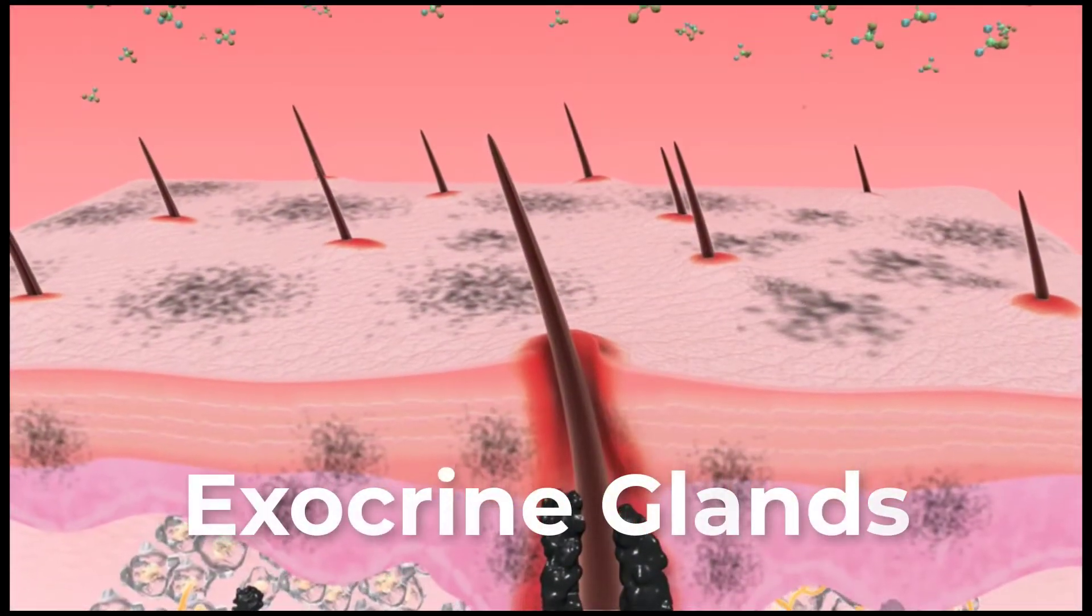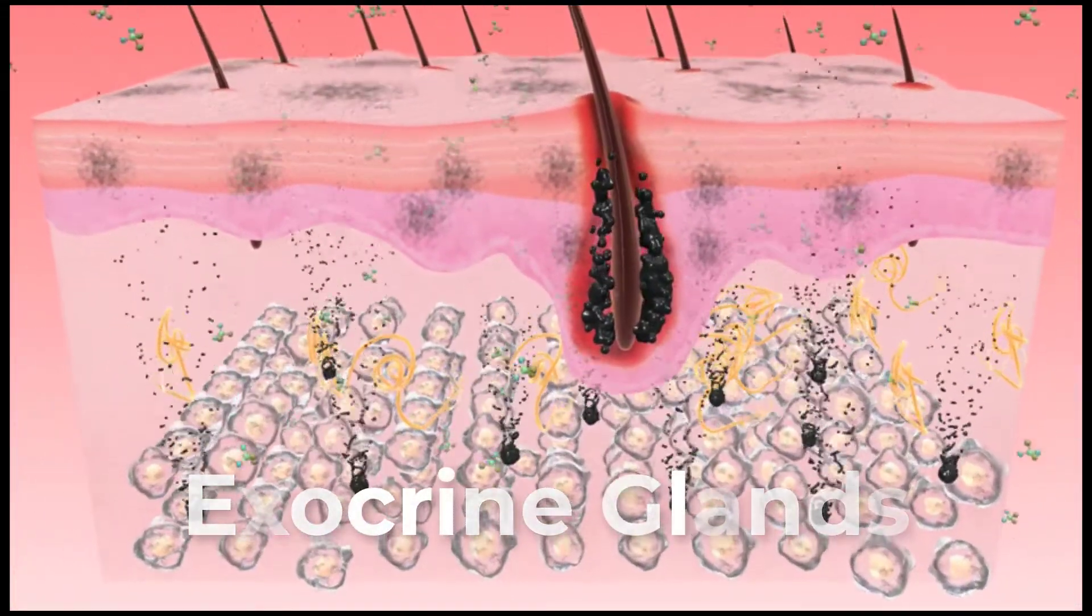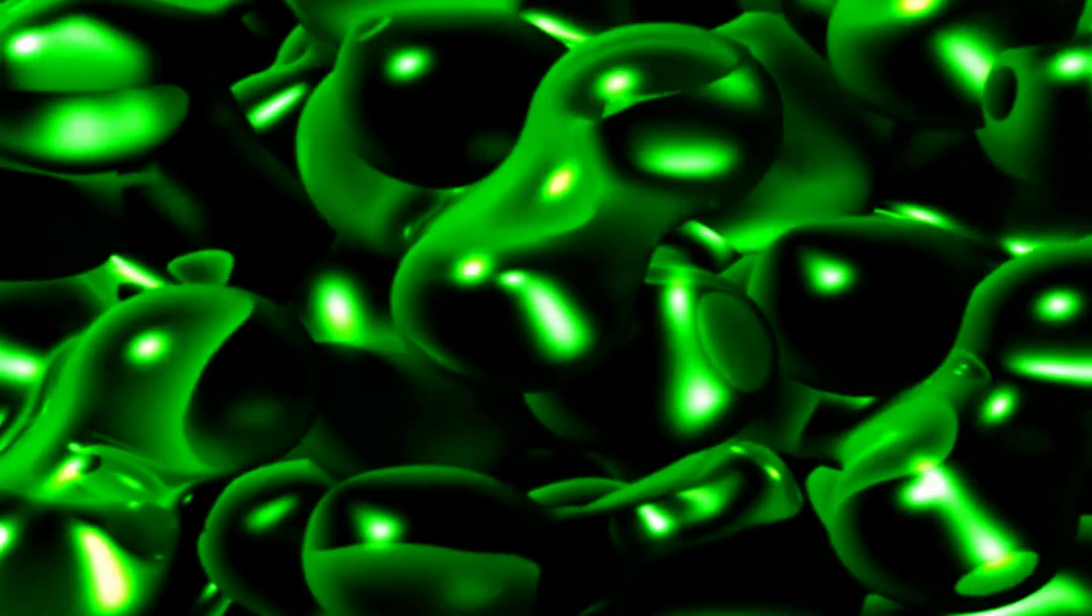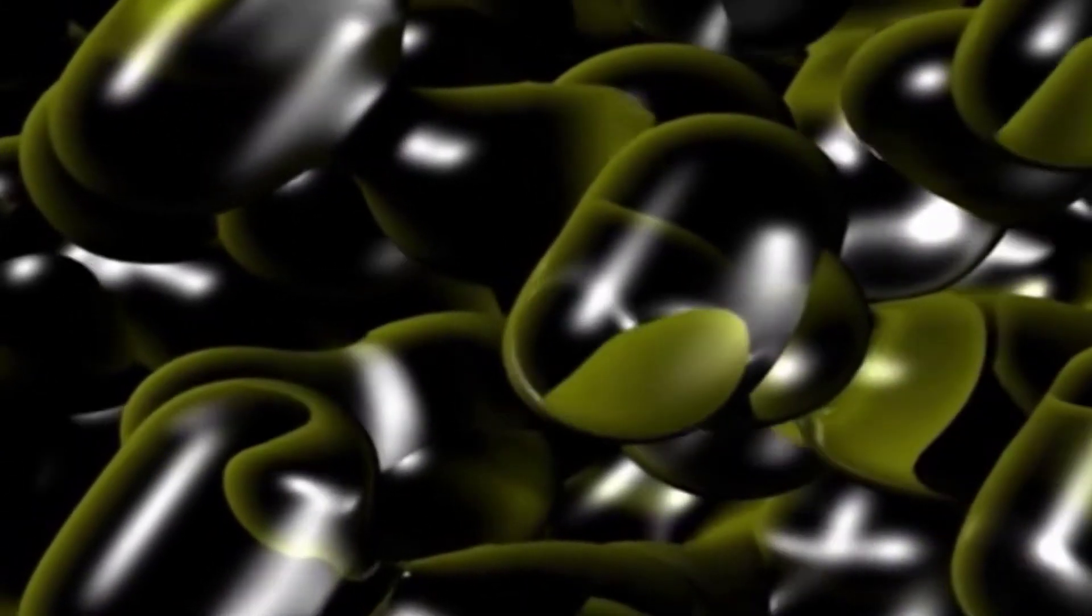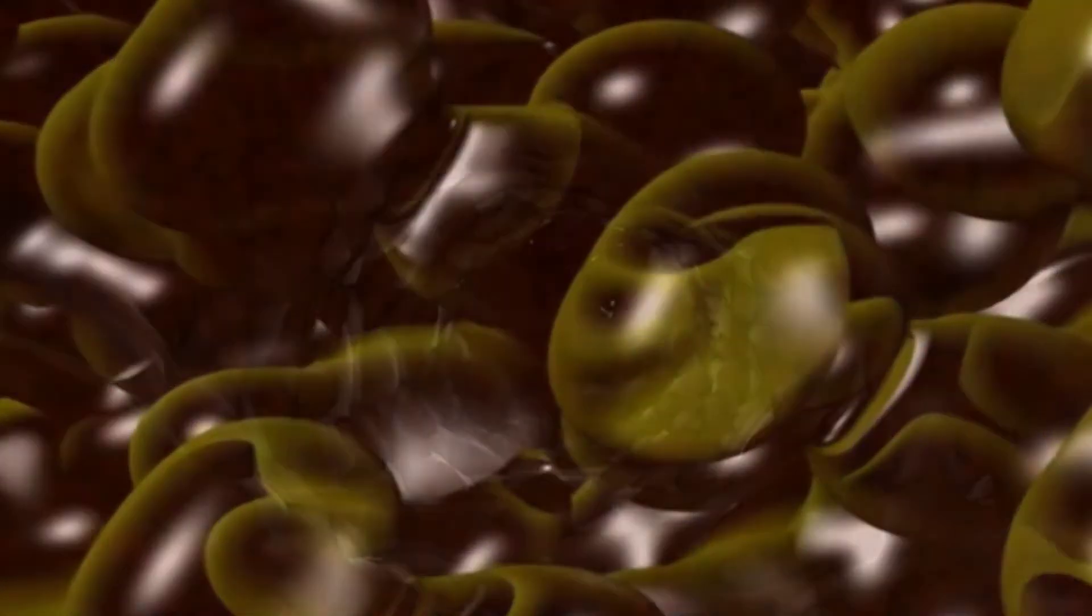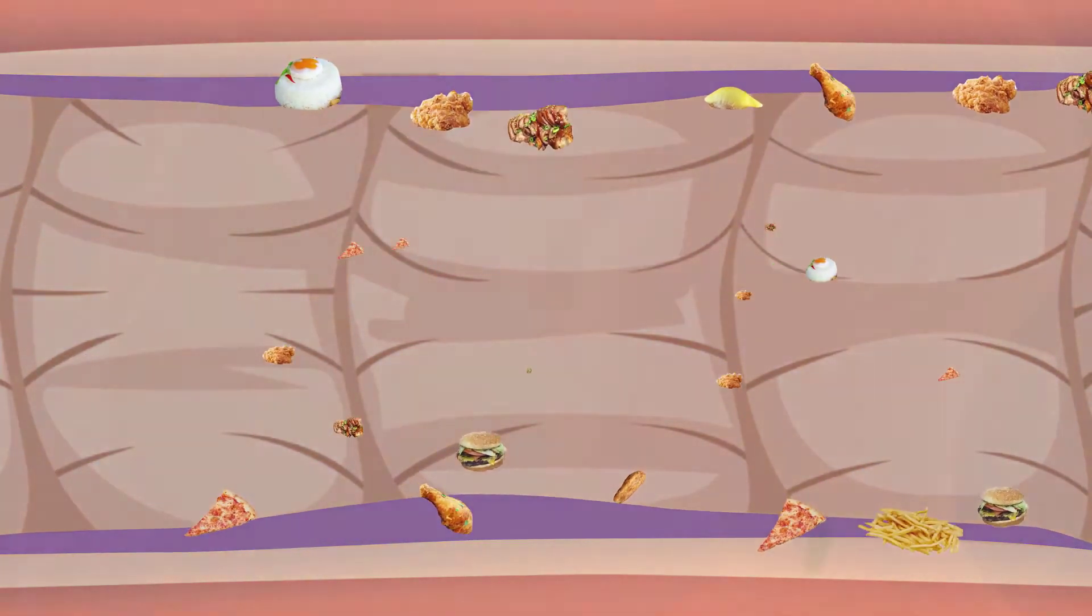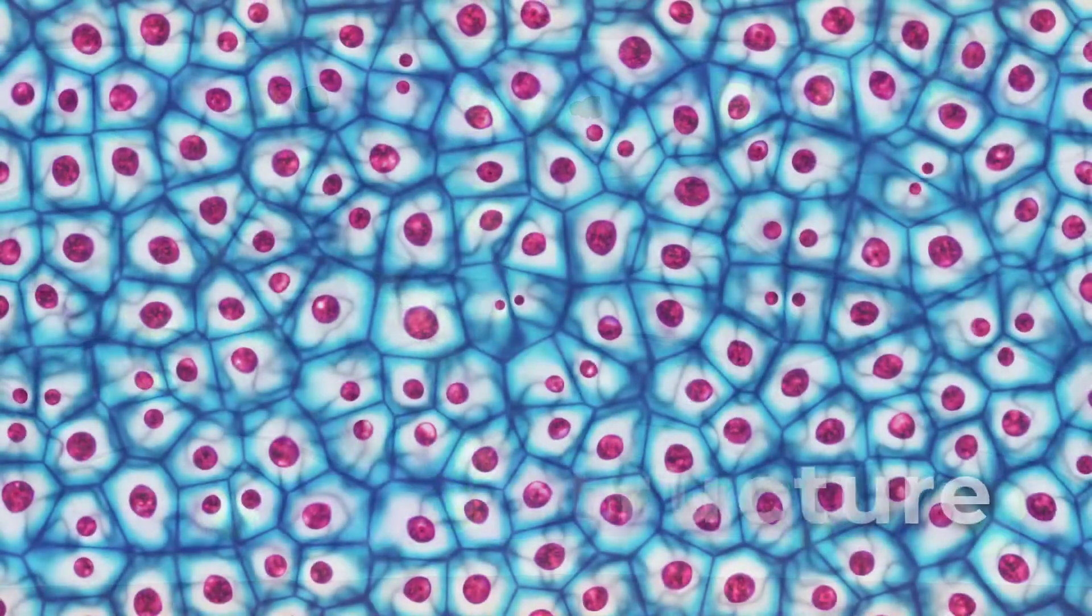Exocrine glands. Exocrine glands release their contents through a duct that leads to the epithelial surface. Mucus, sweat, saliva, and breast milk are all examples of secretions coming from exocrine glands. These secretions are all discharged through tubular ducts. Secretions into the lumen of the gastrointestinal tract technically occur outside of the body and are considered exocrine.